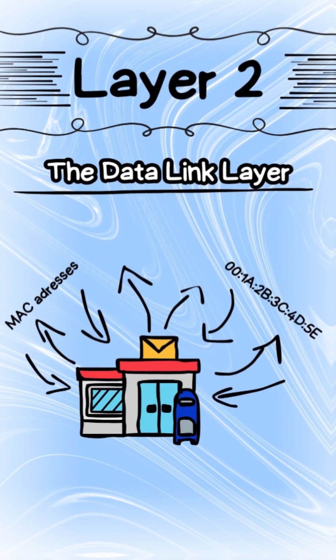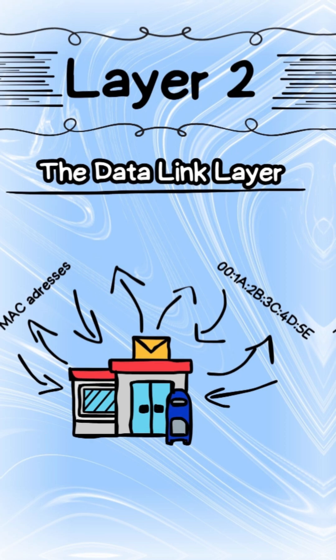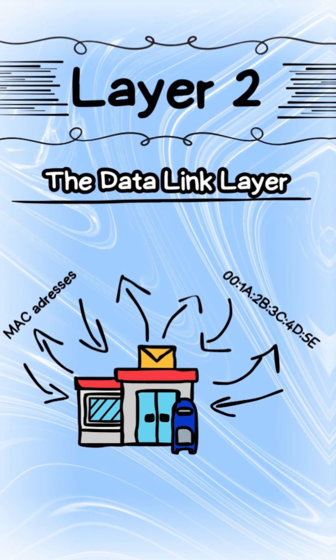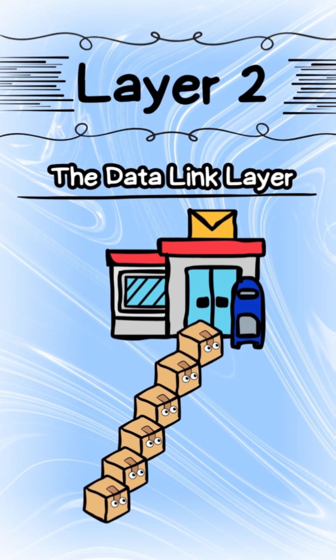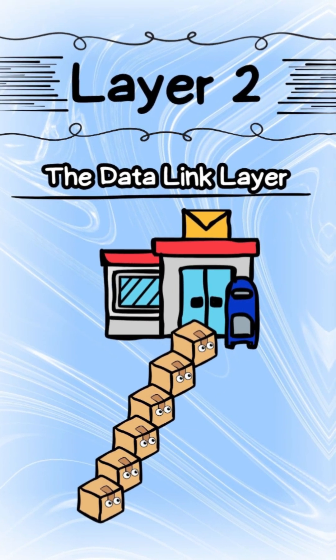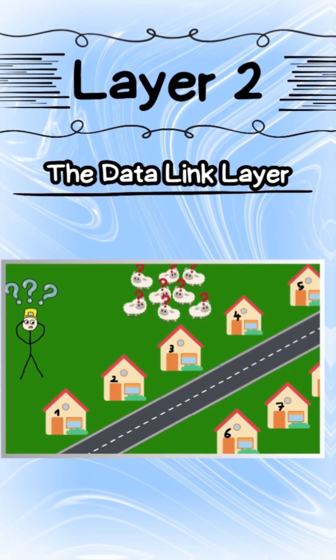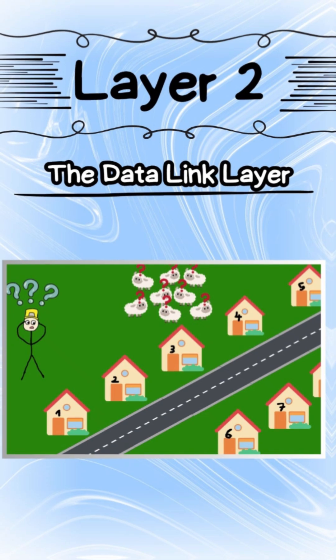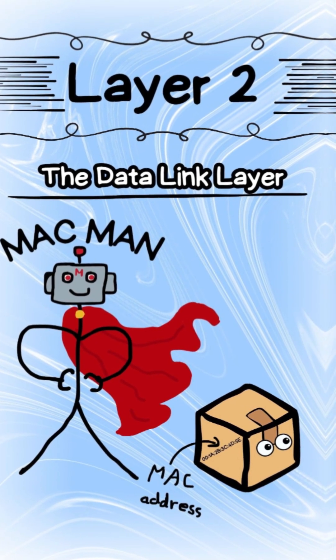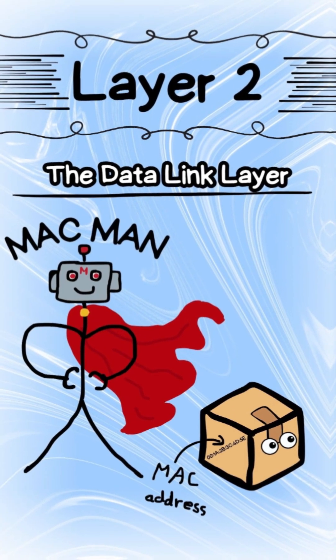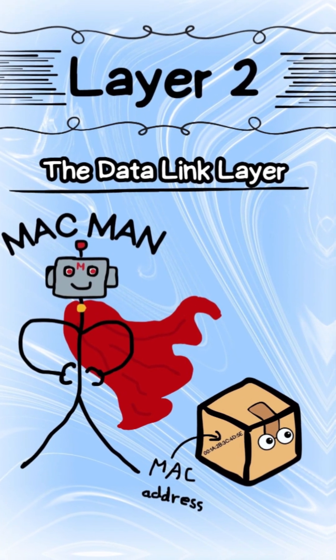Layer 2: The data link layer. Just imagine it as a post office, where data packets eagerly await their exciting journey. But how will they ensure they reach the right destination? The MAC addresses — you could see them as the digital postcode of the cyber realm.